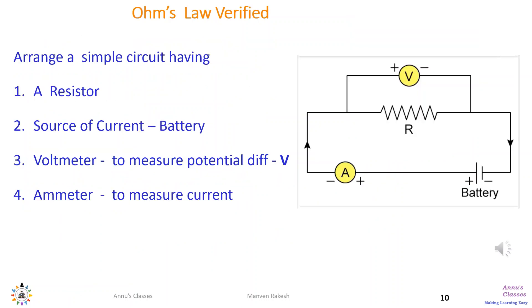To verify Ohm's law, we need to make a simple circuit as shown in the diagram over here. It has four things: resistor, source of current that is battery, voltmeter to measure the potential difference across the resistors, and ammeter which measures the current passing through the circuit.